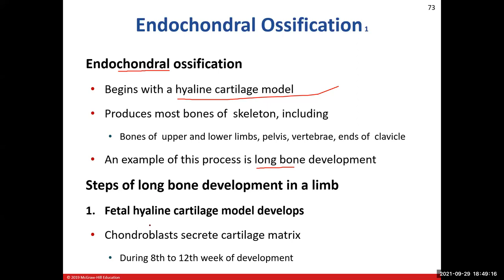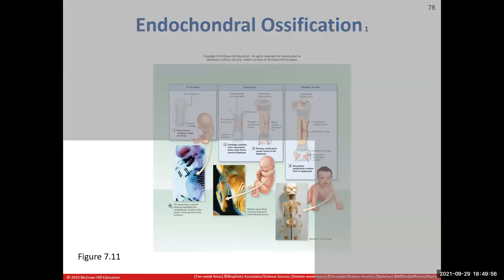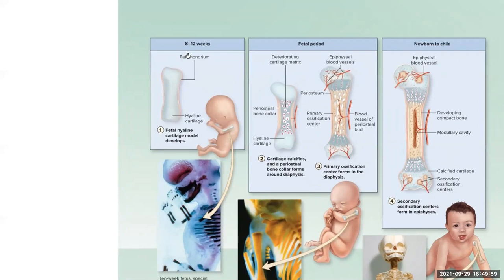Step one: we need a model — a fetal hyaline cartilage model. We get that model through interstitial and appositional growth starting with chondroblasts secreting cartilage matrix. Beginning around week eight, we grow a little mini humerus lined with perichondrium, which helps shape it. That's step one — a mini humerus of hyaline cartilage with chondrocytes inside and perichondrium surrounding it.